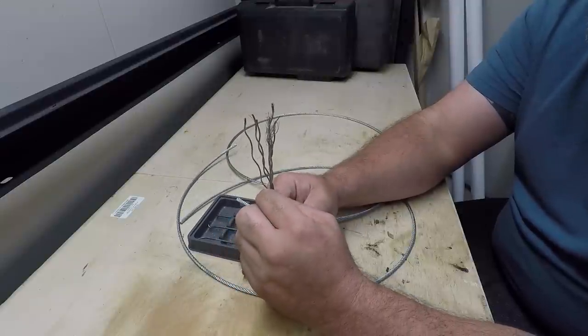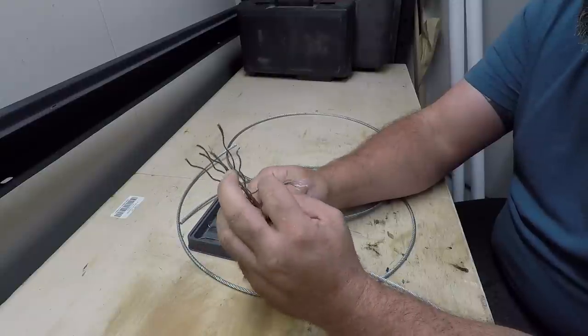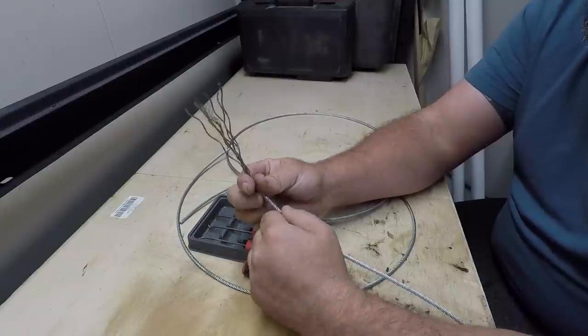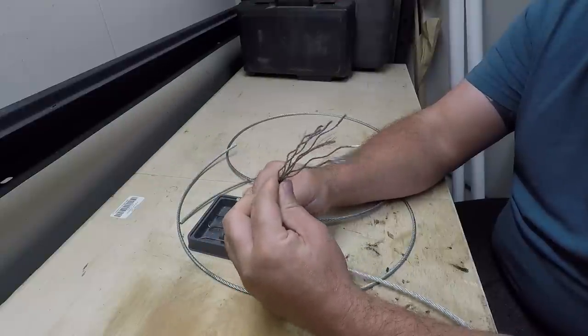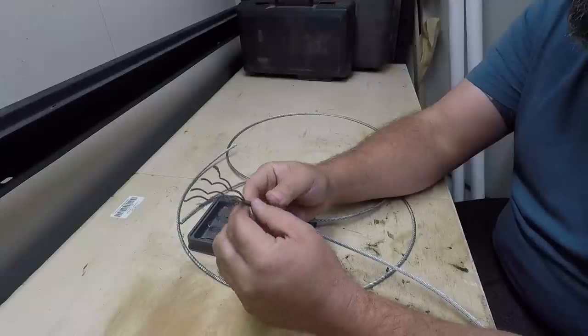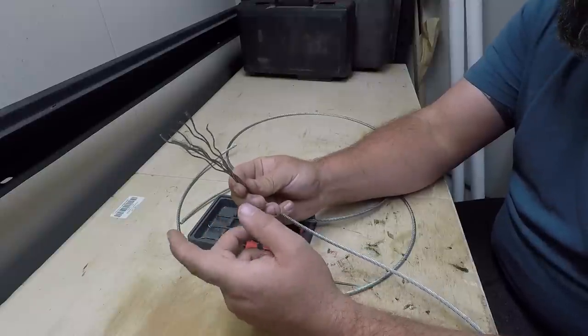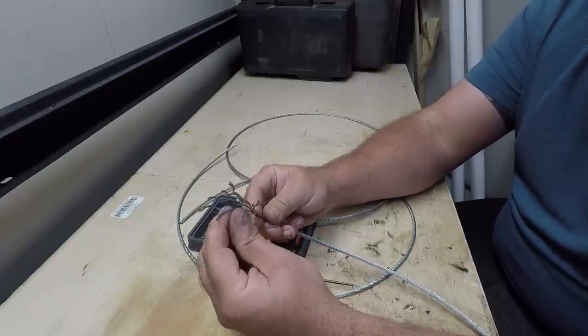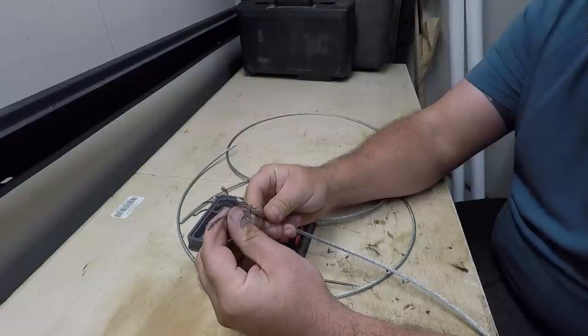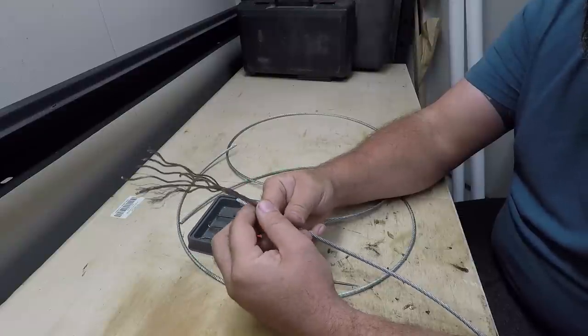This is galvanized and typically galvanized wire rope isn't as strong as what we would use for sling material, but I'm gonna show you guys also how to twist up a Flemish eye and there's a couple different ways to do it and I'll show you both ways.